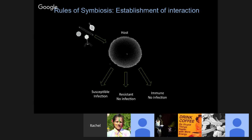But beyond establishing that natural variation, we need to understand the rules of symbiosis. Here's what we know about virus-host interactions at this stage: we have a set of viruses that interact with the host. The host can be susceptible, resistant, or immune. If susceptible, it gets infected; if resistant or immune, it does not get infected, because this adaptive immune system prevents infection.